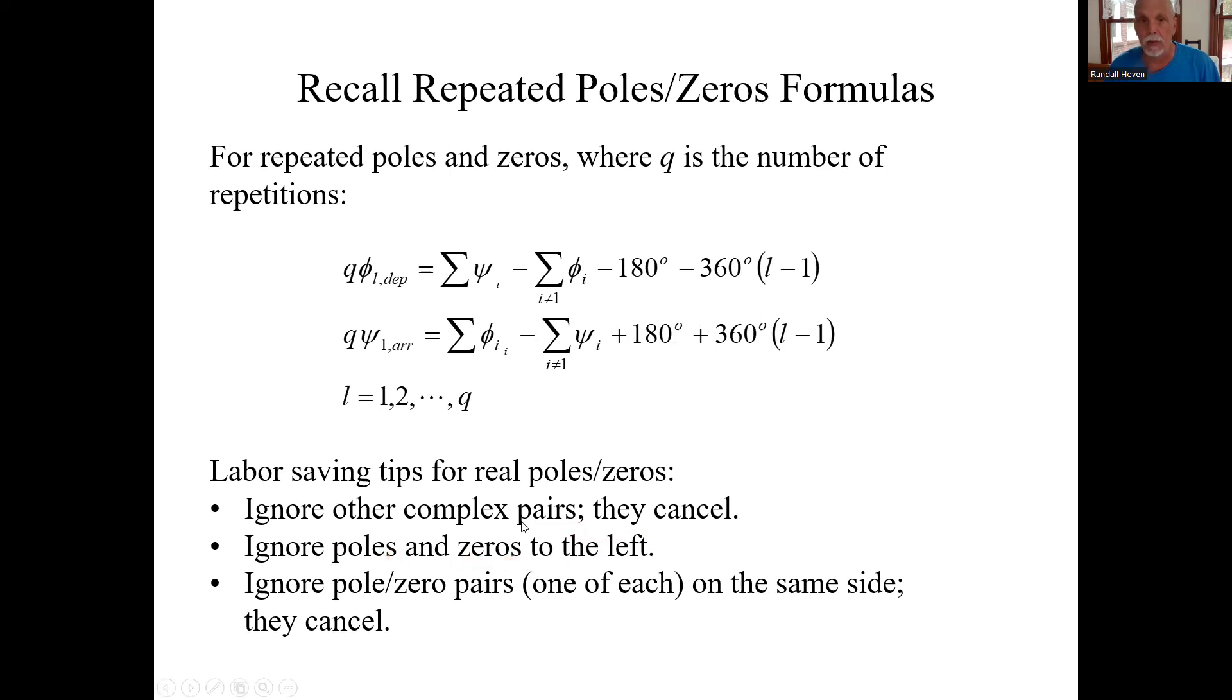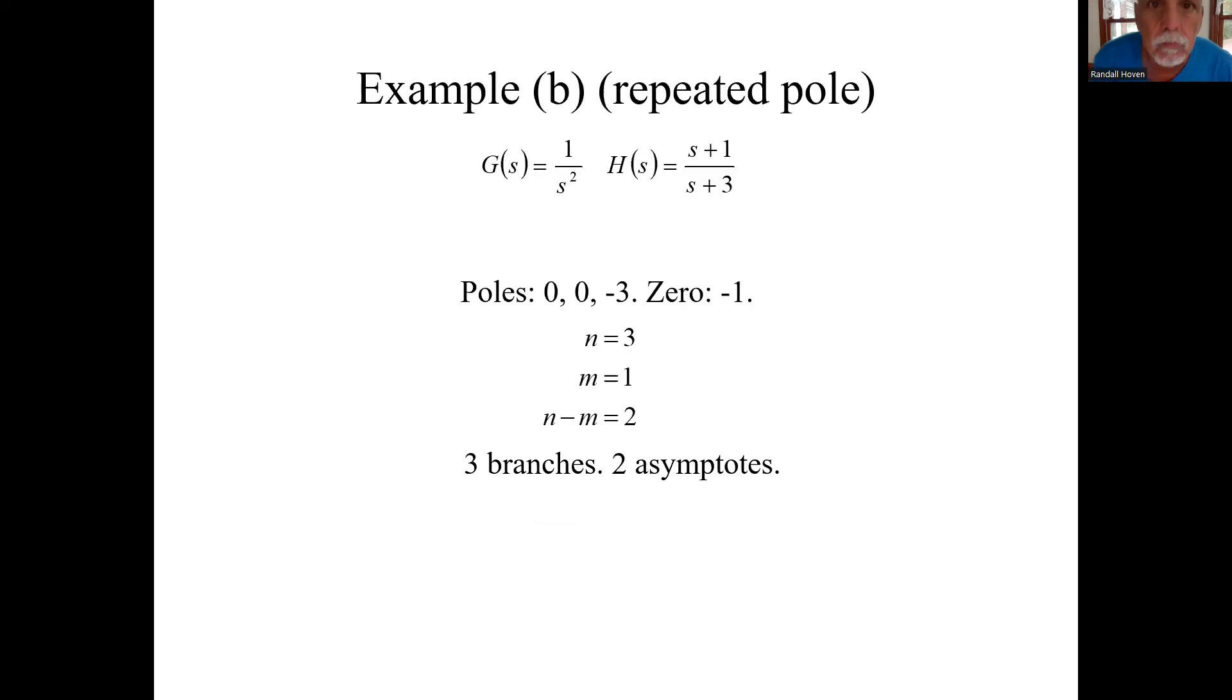Ignore poles and zeros to the left. The pole or zero in question. And a pair of pole, a pole and a zero on the same side of the pole in question will cancel each other out. So here's the example.